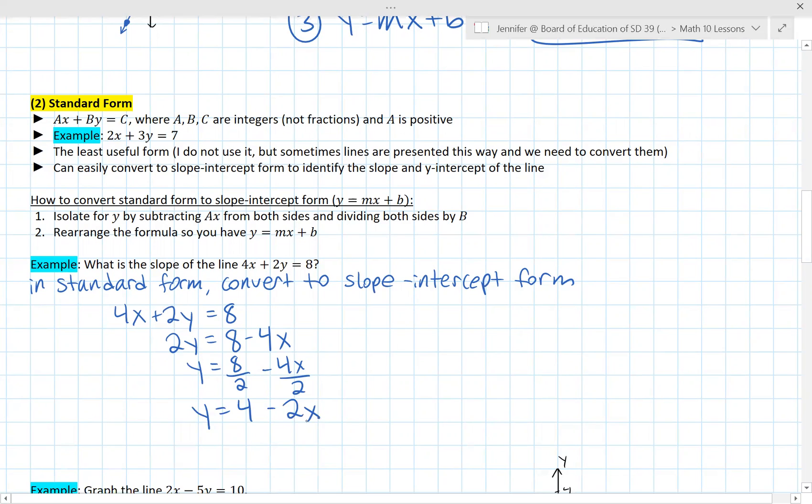That leaves us with 4 minus 2x. This is almost our correct form. Let's just rearrange it because we want mx plus b. We want whatever's with the x to go first. So now we've converted that to our y equals mx plus b form. Both of these equations represent the same line. It would be graphed the same way. They're just represented in slightly different ways. And this one's more useful because now we know that the slope or m is equal to negative 2. We also know that the y-intercept is 4, but this was just asking for the slope.